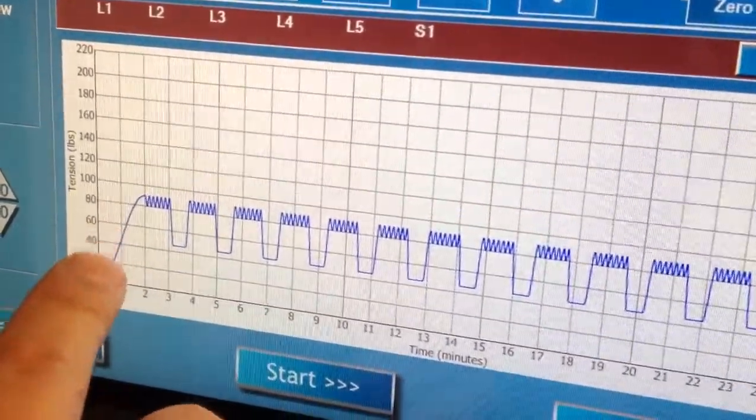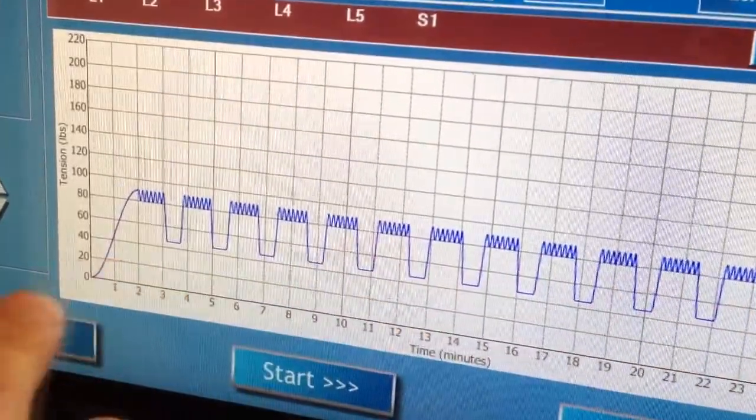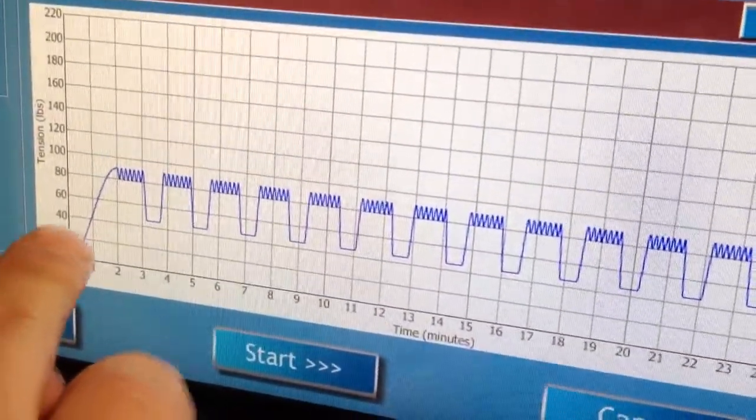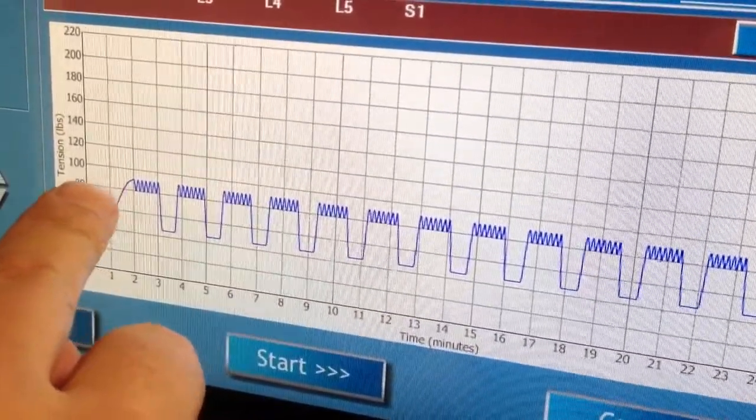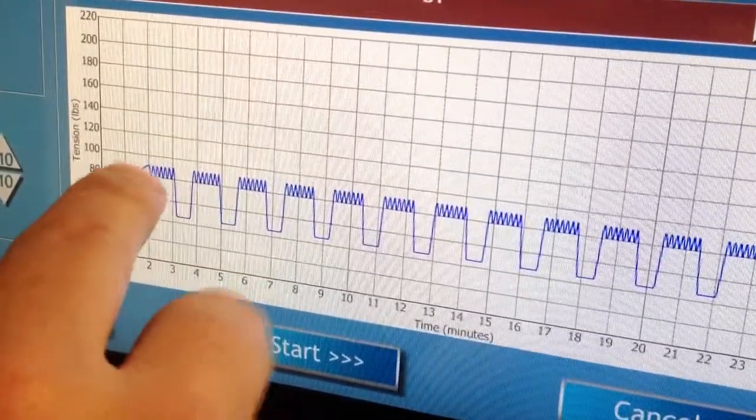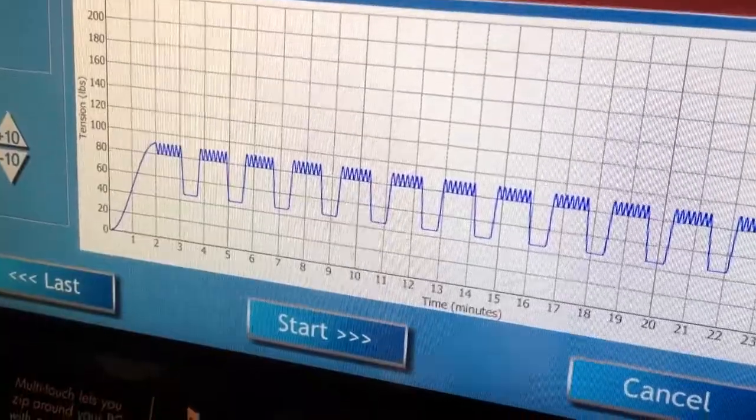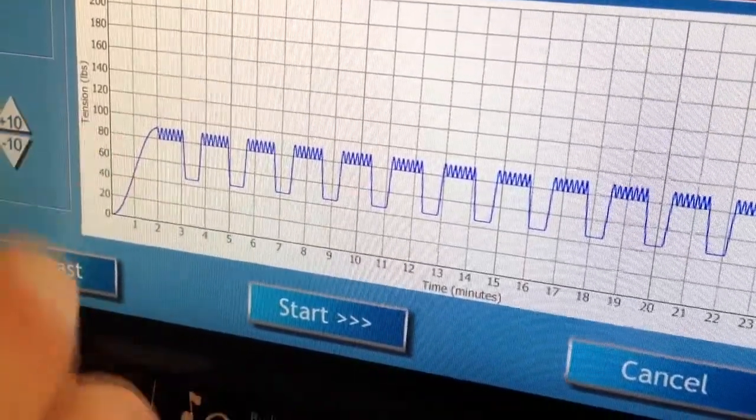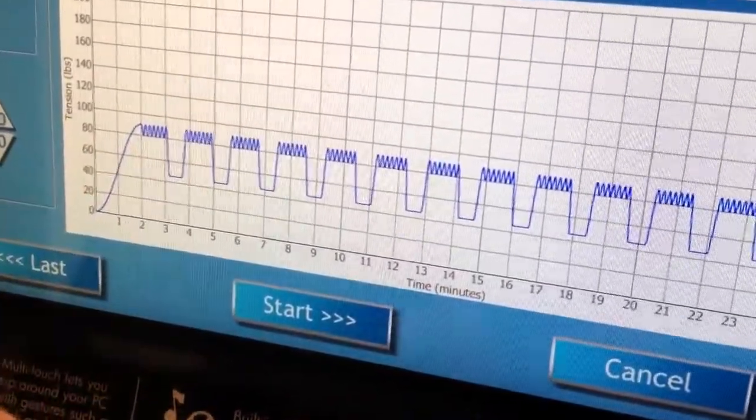So this is what an IDD therapy typical treatment looks like. We have a high distraction force, in this case it's 90 pounds, and then at the top when the joint is open we have this oscillation which presently is 10 pounds.